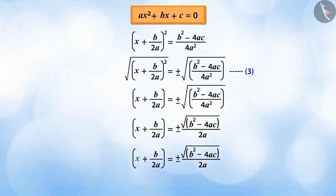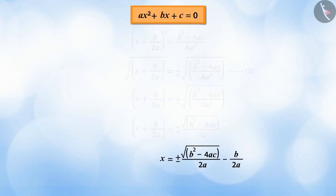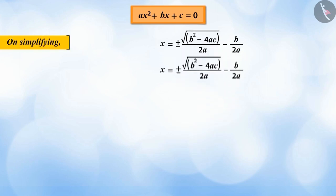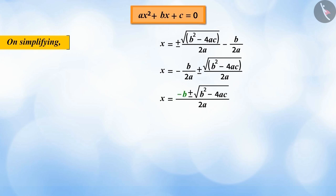Now, keeping the variable x to the left, the constant term b over 2a moves to the right side. On simplifying this, we can see that we get x equals minus b plus or minus the square root of b squared minus 4ac, all over 2a, which is represented in equation 4.